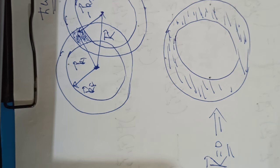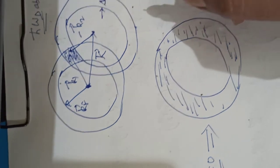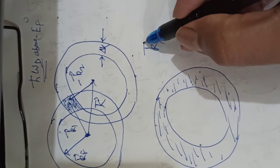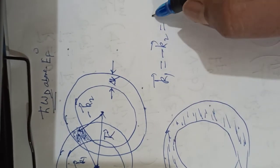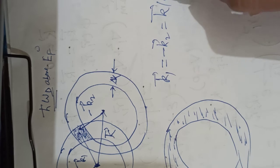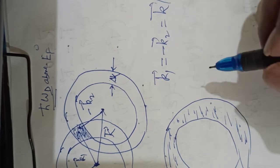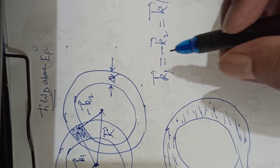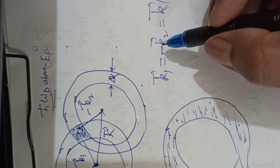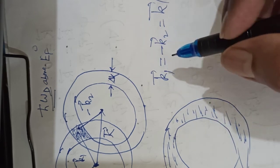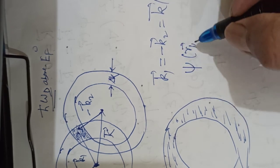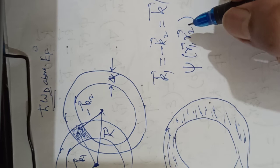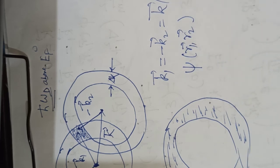It is therefore sufficient to consider the case k₁ = -k₂ = kc, that is electron pairs with equal and opposite wave vectors. The associated two particle wave function ψ(r₁, r₂) must obey the Schrödinger equation.